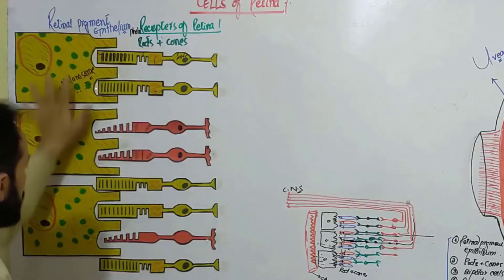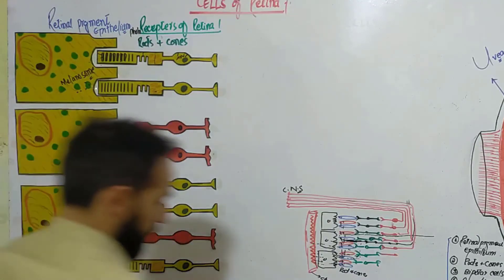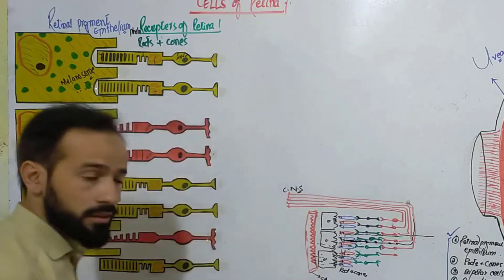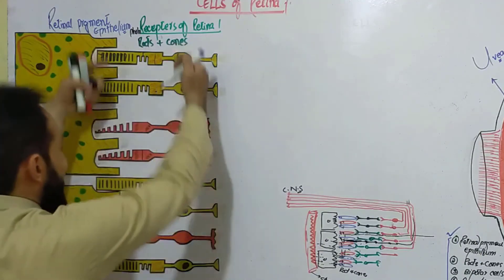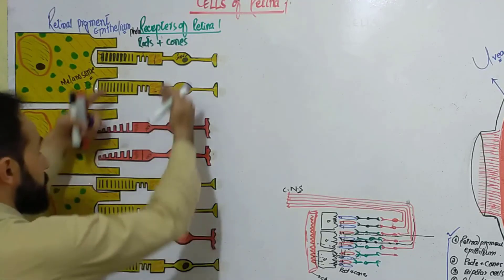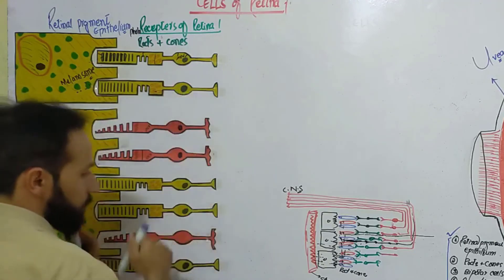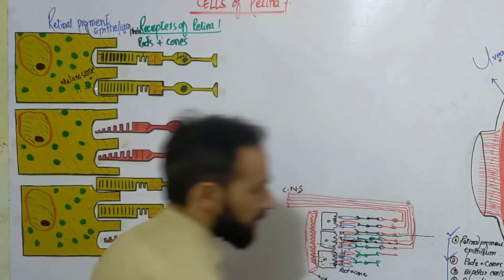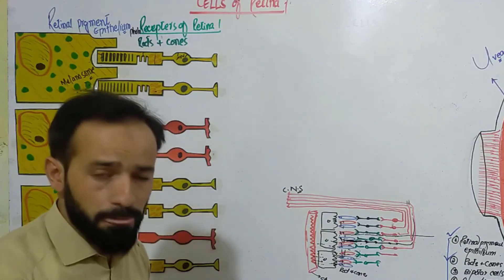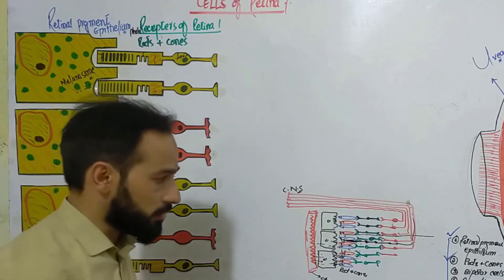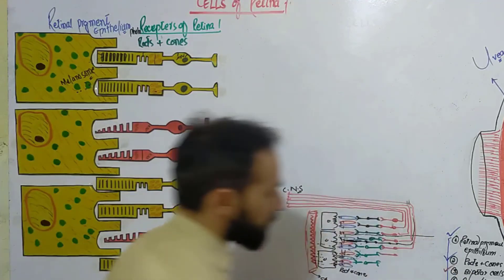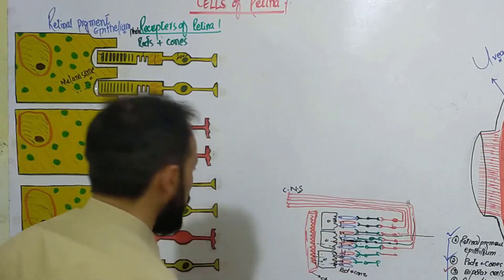Next to the retinal pigment epithelium are the rods and cones, which I have discussed in the previous lecture in great detail. Then the next layer of cells, adjacent to the rods and cones, are the bipolar cells.